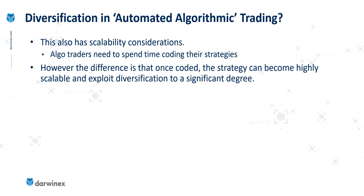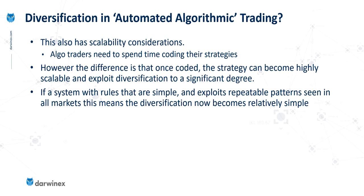For example, if you've developed a system where the rules are relatively simple and that is capable of exploiting repeatable patterns — so maybe a trading range, a trend, or a breakout that we typically see in all markets — then diversification becomes relatively simple. You can set that strategy onto multiple asset classes, assets within those classes, and multiple timeframes with relative ease.